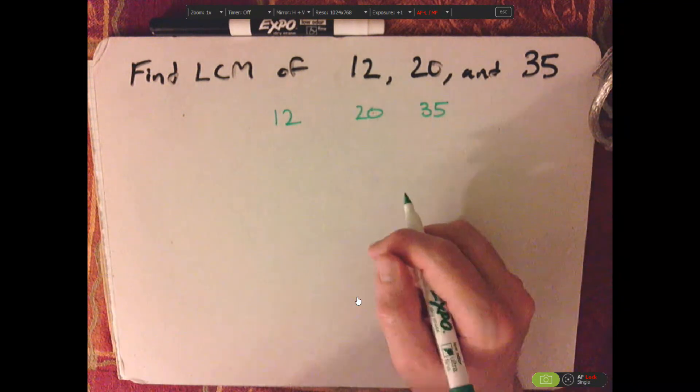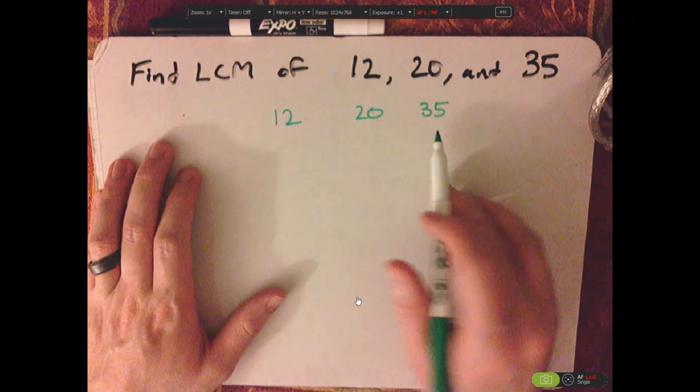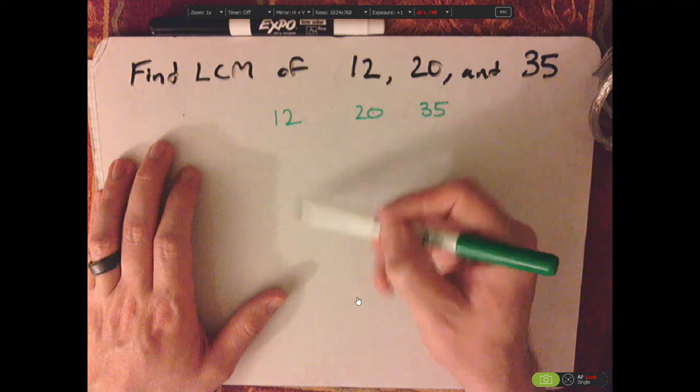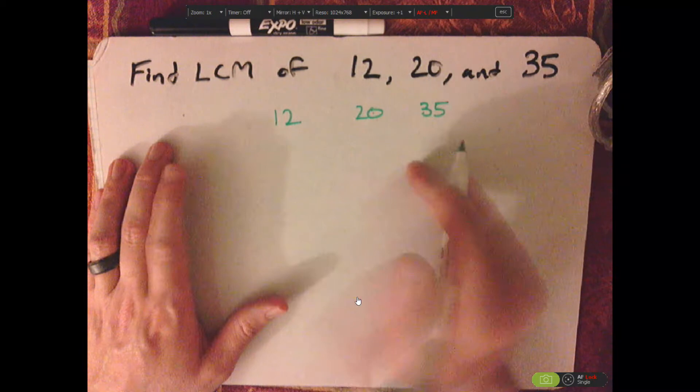Now, what you want to do is start just dividing them. You want to divide them until you get to 1. Now, if there's a remainder, ignore it.